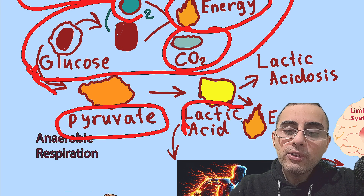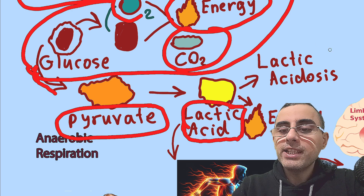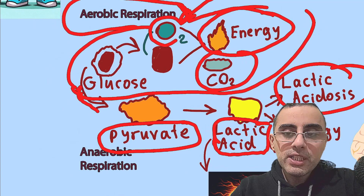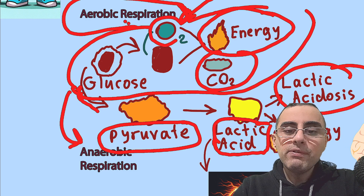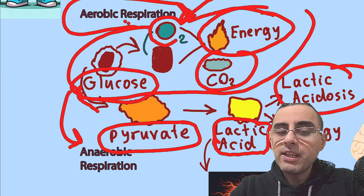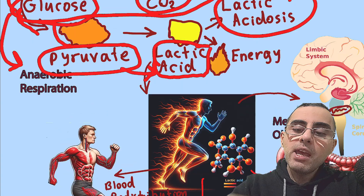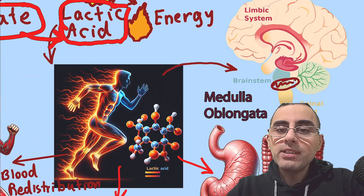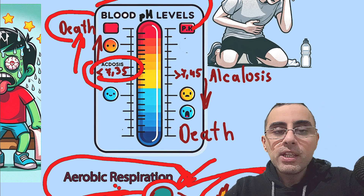From pyruvate, lactic acid is formed, and from lactic acid we get energy. But when lots of lactic acid is formed, not all of it is consumed — it builds up in muscles and then releases into the bloodstream, causing lactic acidosis. This lactic acid creates an acidic environment in the blood and drops blood pH.